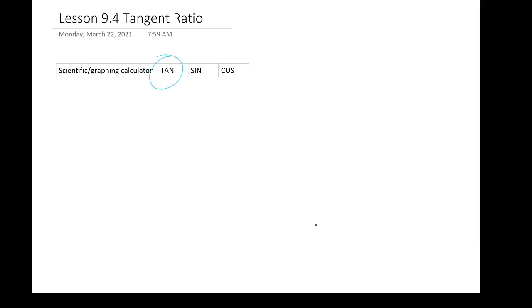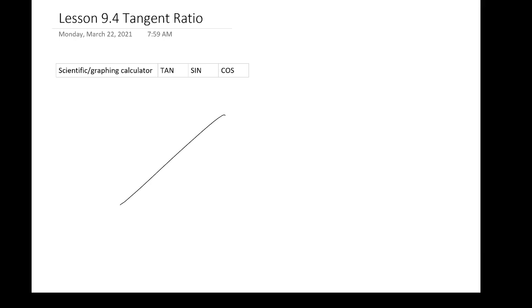We're not going to just call this 'tan' — it drives me nuts the same way people say 'sin' or 'cos' because they're lazy. T-A-N is actually short for 'tangent.' It's referring to a trigonometric ratio that we have within a triangle.